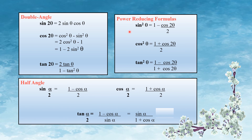Power reduction formulas: sin squared theta equals (1 minus cos 2theta) divided by 2. cos squared theta equals (1 plus cos 2theta) divided by 2. tan squared theta equals (1 minus cos 2theta) divided by (1 plus cos 2theta).